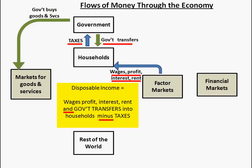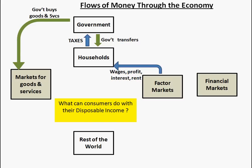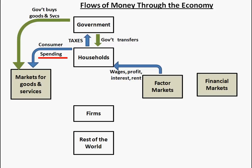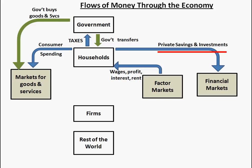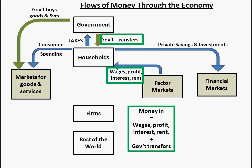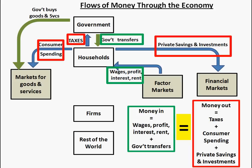The disposable income that households have is that money that came in — wages, profit, interest, and rent, and the government transfers — minus the taxes that had to be paid out. That is disposable income. Consumers can buy things with it, both goods and services, and they can also save or invest part of that money going into the financial markets. The money coming into households will exactly equal the money going out in taxes, consumer spending, and private investment.